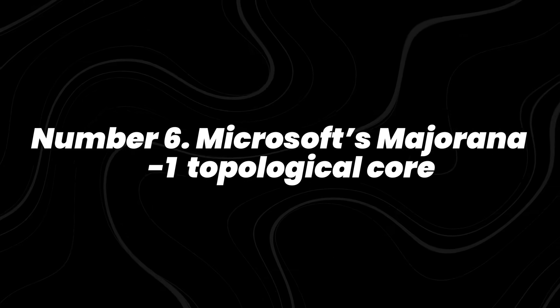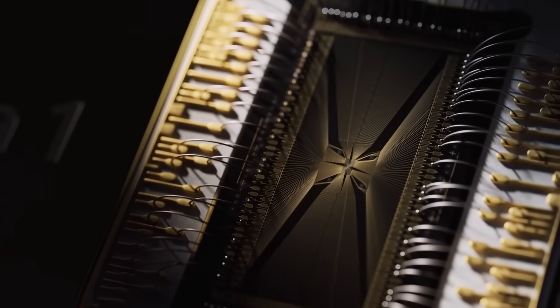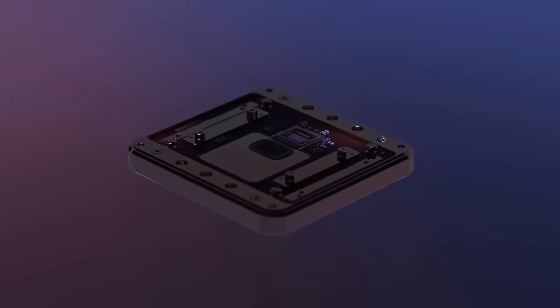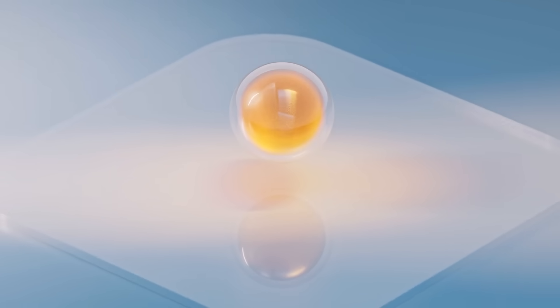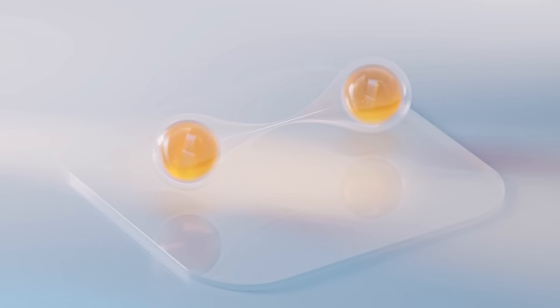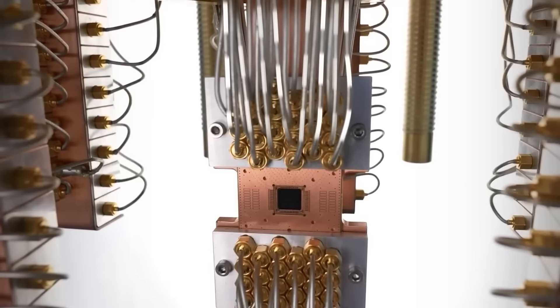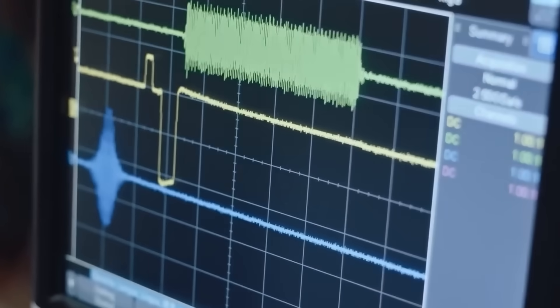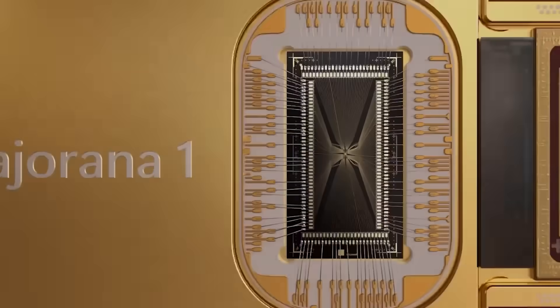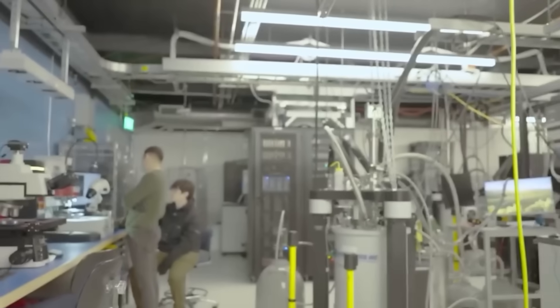Number 6. Microsoft's Majorana 1 topological core. Instead of building larger chips, Microsoft is trying a different approach. Their Majorana 1 chip is based on topological qubits, which use exotic quantum states that are more stable than ordinary qubits. The idea is that these qubits are protected from certain types of noise because of the way quantum information is stored. The Majorana 1 device is a small prototype. Not a huge processor, but the architecture matters.